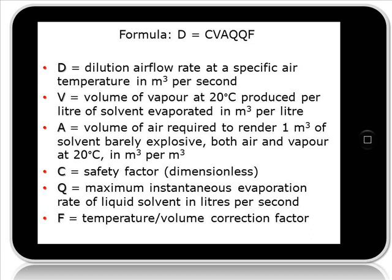Generally speaking, the common characteristics of common flammable liquids can be found in AS1375 Table G. Under the column heading 'air rendered barely explosive by one litre of liquid solvent in cubic metres,' that will give you the requirement for the VA component. C is a safety factor — depending on whether it is a continuous oven or a batch oven, you should decide which value to use. Q is the instantaneous evaporation rate of the liquid in litres per second, which you should be able to find out.